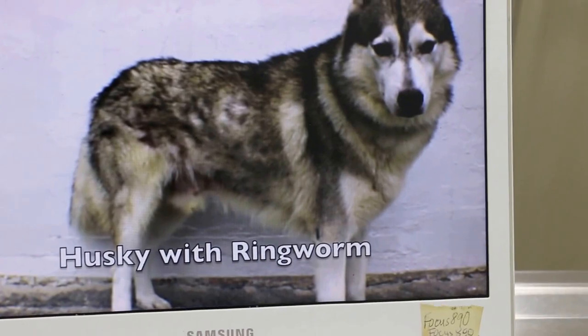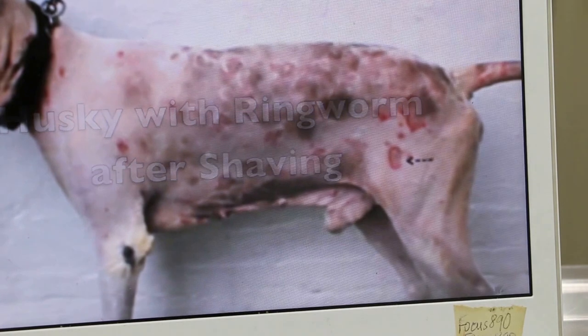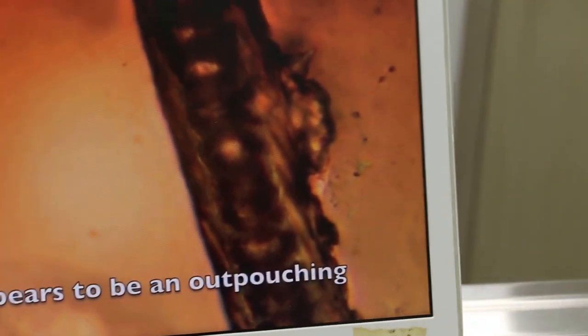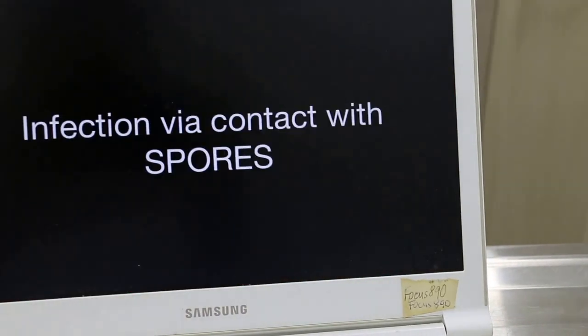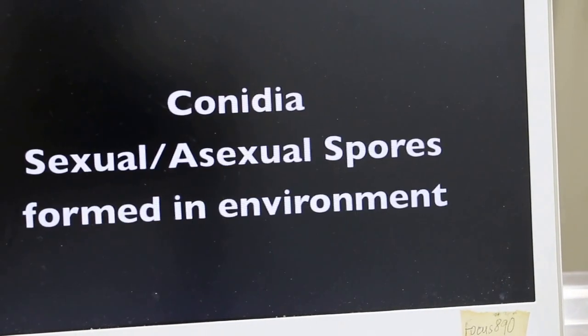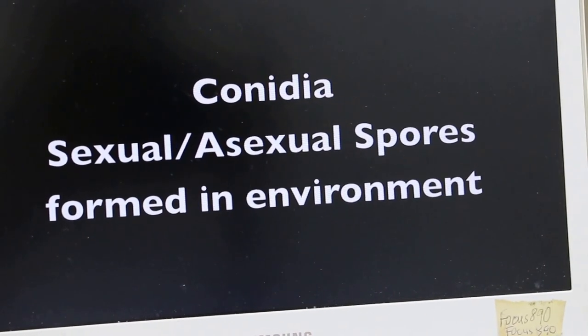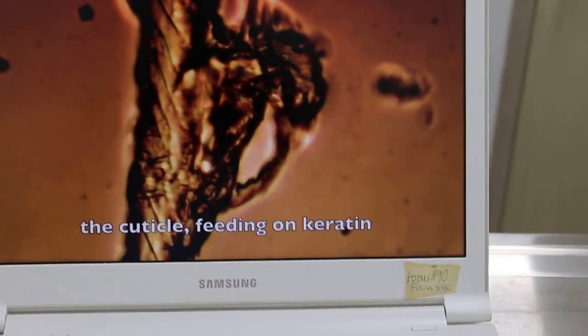The cuticle is the outer surface of the hair. The spores of the fungi form the environment, and after spores, asexual spores are formed in the parasitic stage. Spores attach to the hair, colonize the cuticle, feeding on keratin.